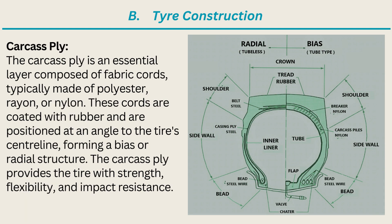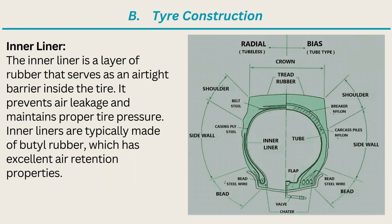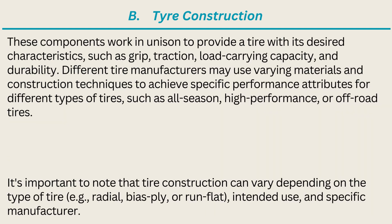Carcass Ply: the carcass ply is an essential layer composed of fabric cords, typically made of polyester, rayon, or nylon. These cords are coated with rubber and are positioned at an angle to the tire's centerline, forming a bias or radial structure. The carcass ply provides the tire with strength, flexibility, and impact resistance. Bead: the bead is the part of the tire that sits on the wheel rim. It consists of steel wires wrapped in rubber and is designed to securely anchor the tire to the rim. The bead ensures proper fitment, tire stability, and effective transfer of forces between the tire and the wheel. Inner Liner: the inner liner is a layer of rubber that serves as an airtight barrier inside the tire. It prevents air leakage and maintains proper tire pressure. Inner liners are typically made of butyl rubber, which has excellent air retention properties. These components work in unison to provide a tire with its desired characteristics such as grip, traction, load-carrying capacity, and durability.